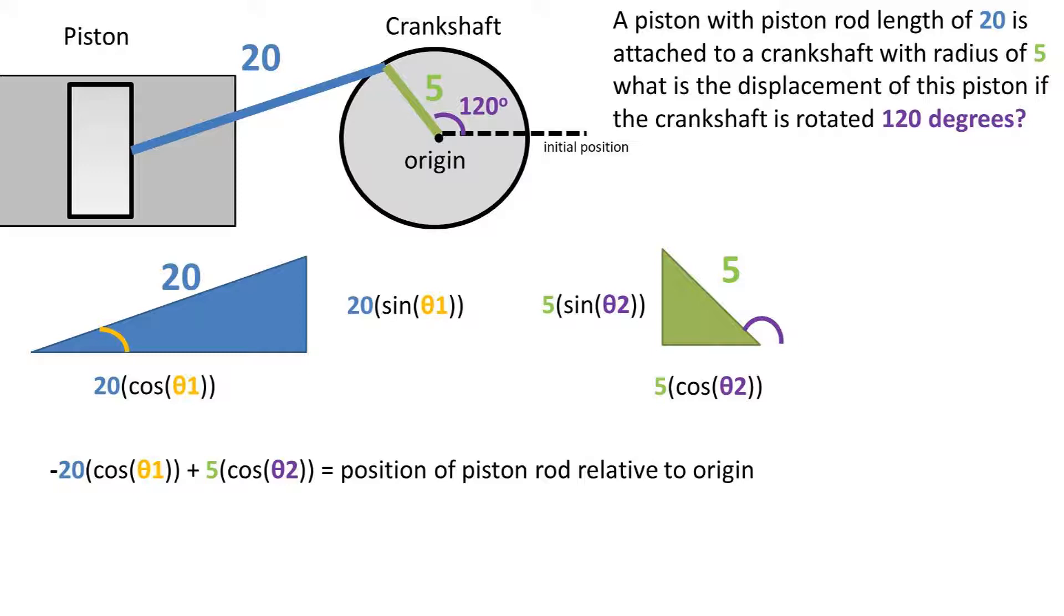Next, we need to figure out what the angle 1 of the blue piston rod triangle is. If we look at these two triangles, we notice that the height, or opposite side of the triangle from the angles, are shared, or in other words, are equal, so we can set these two side lengths equal to one another.